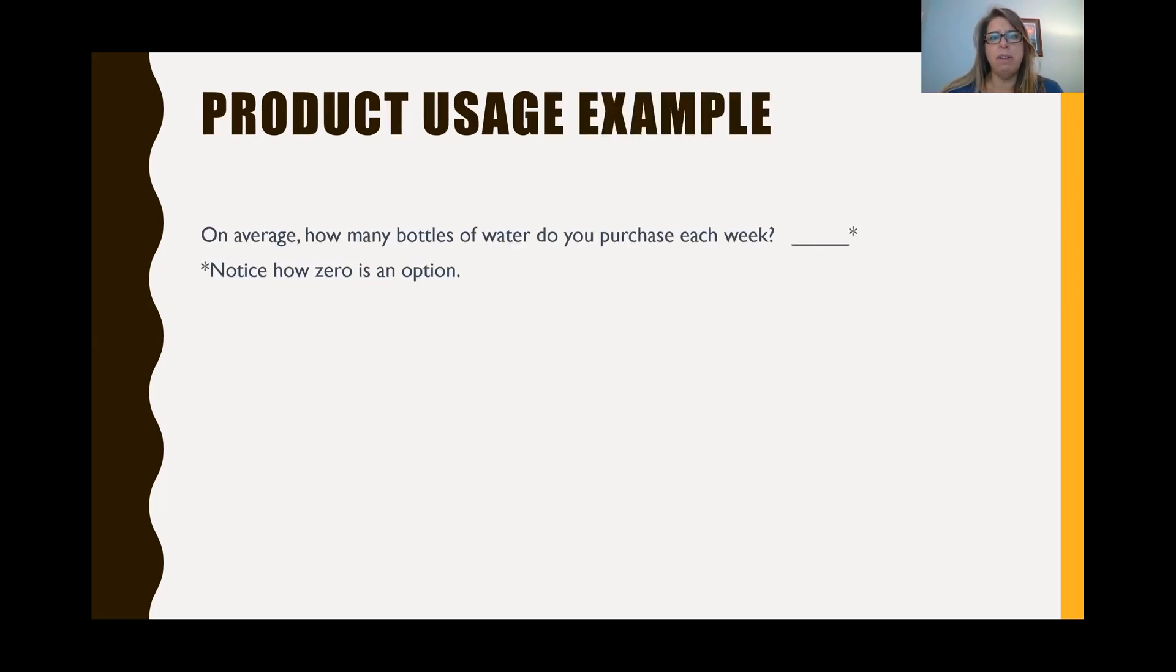So let's go through a couple examples. You have a product usage example here. A survey question on average, how many bottles of water do you purchase each week? You could say zero. So zero is an option here. So it makes it a ratio scale.